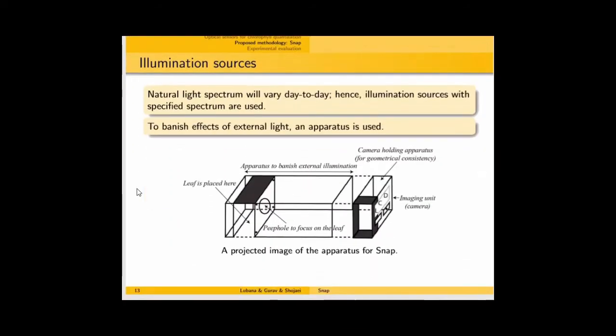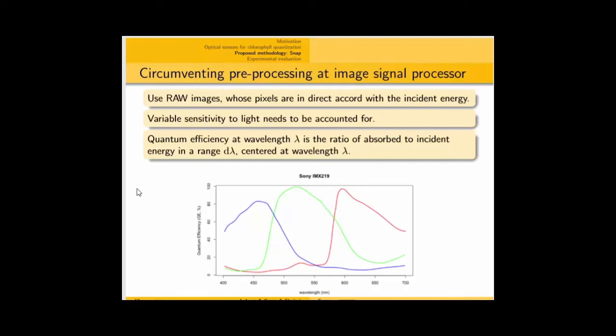If one knows the incident illumination energy spectrum and given the pixel value, one can now determine the amount of energy that was incident at that pixel by just dividing that pixel value with the quantum efficiency.